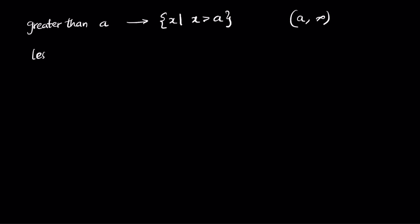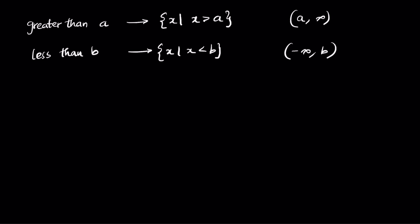If you have less than b, we write it as x such that x is less than b, or as open interval negative infinity comma b. Notice that we are not including b here.